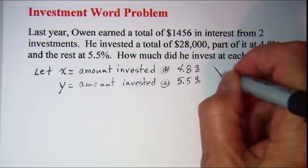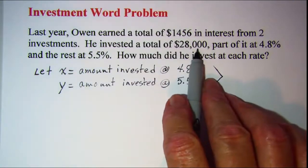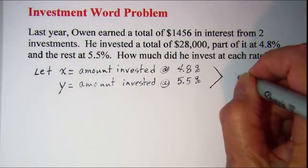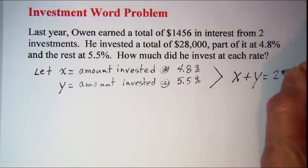So we know then that he invested a total of $28,000, so that means that x plus y equals $28,000.